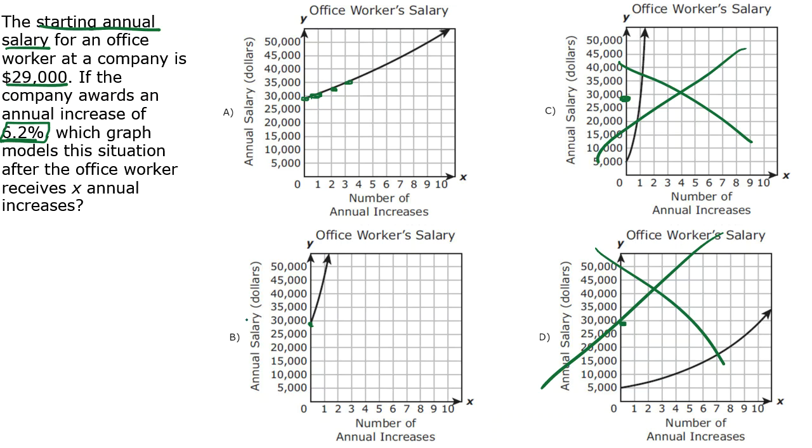If we look at answer choice B, you'll notice that from year zero to one, it goes from $30,000 to $45,000. That's $15,000 more.